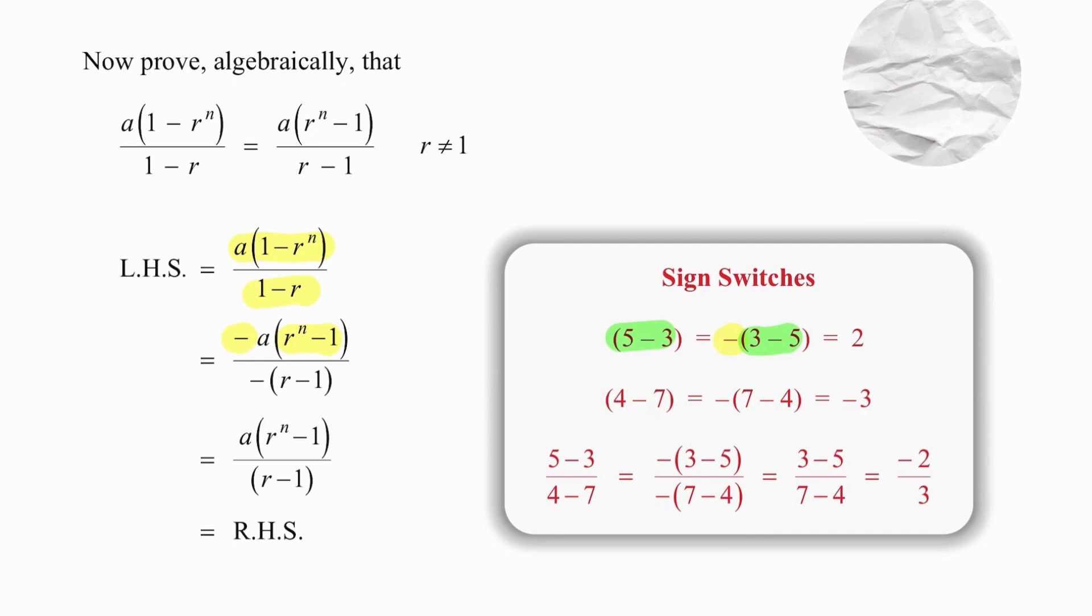At the bottom, we are going to switch again the 1 and the r, and we're going to put a negative in the front to undo the switch. Those two negatives simply cancel each other out, and we have proved quite comfortably that it makes no difference whether we put the ones first or the ratios first. So be comfortable with both forms of that formula.